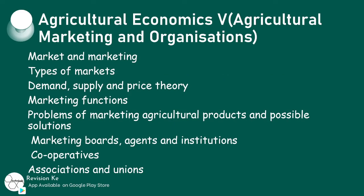Having defined markets and marketing, we're going to describe the various types of markets, describe how the law of supply and demand affects the prices of agricultural products, state the various marketing functions, agents and institutions, and identify problems in marketing of agricultural products.